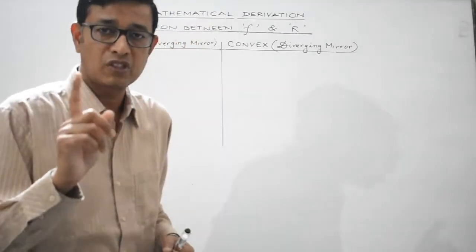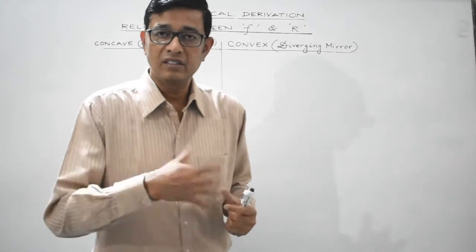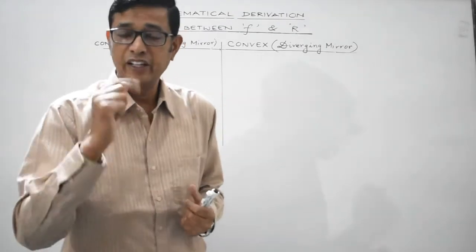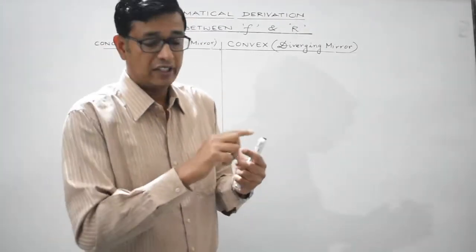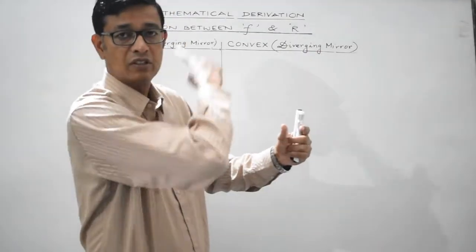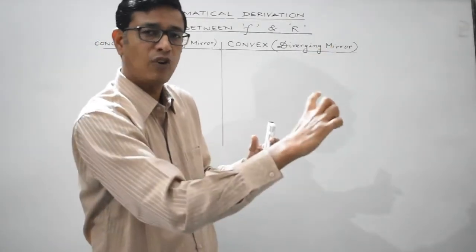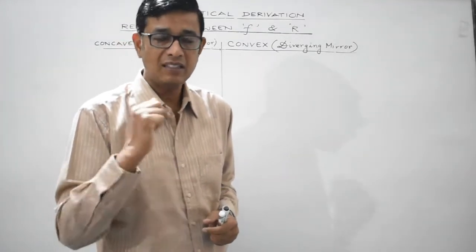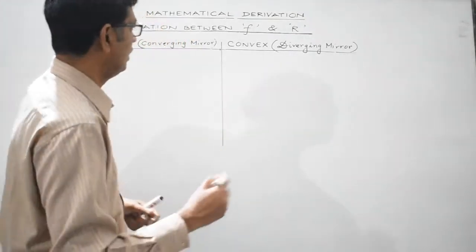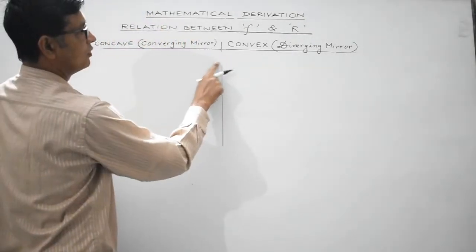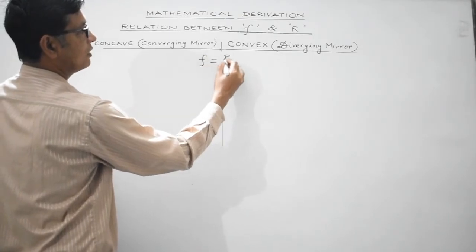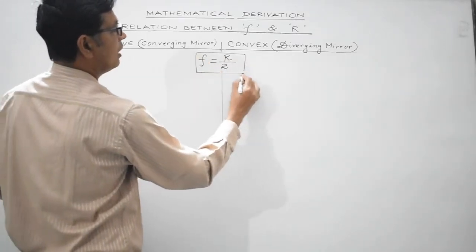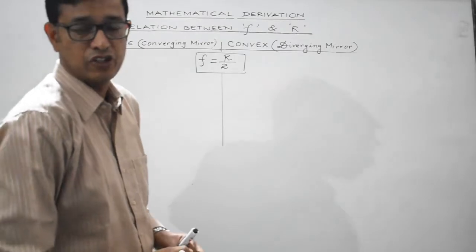Focal length is the distance of the principal focus from the pole of a mirror, and radius of curvature is the radius of a hollow sphere of which a spherical mirror forms a part. So basically F is related to capital R as F = R/2. That is what we are going to prove — F = R/2, that is, the focal length of a mirror is given by half the radius of curvature.